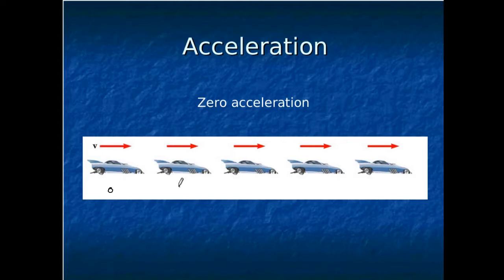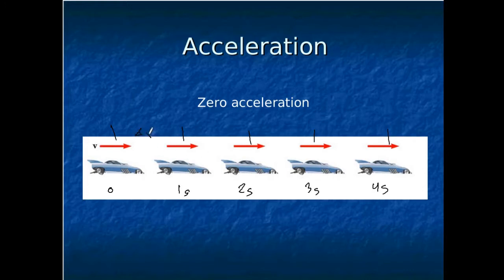So the first one is time zero, then one second, two seconds, three seconds, and four seconds. The object is moving at the same speed — the arrow here indicates how fast it's moving. The distance traveled between each image is the same; the delta x between each one-second interval is the same. That means the velocity is the same for each time slice, and therefore the object isn't accelerating. If the velocity doesn't change, the acceleration is zero.